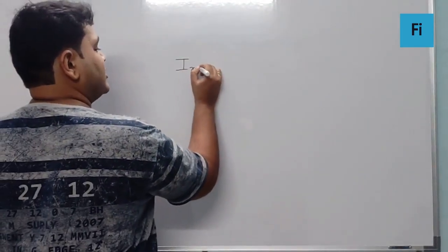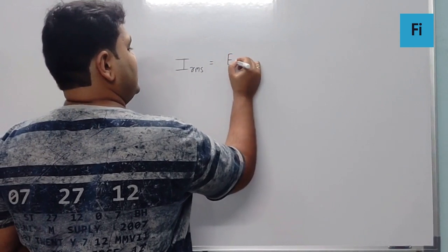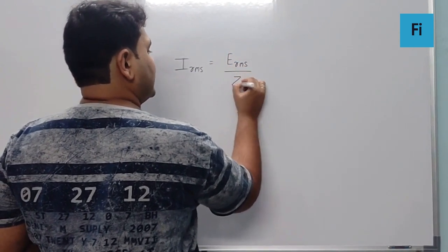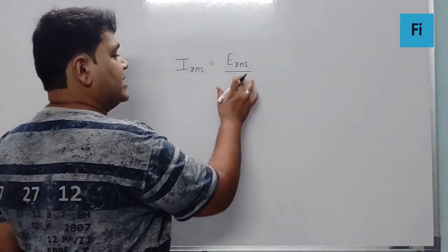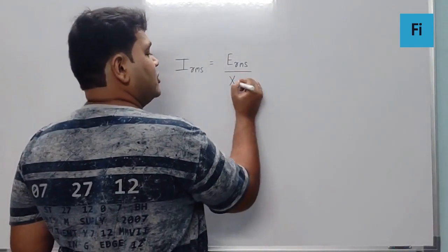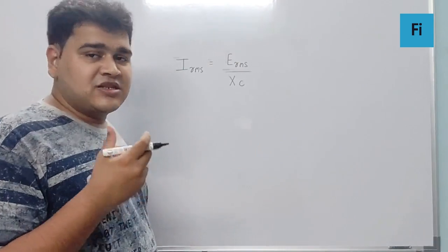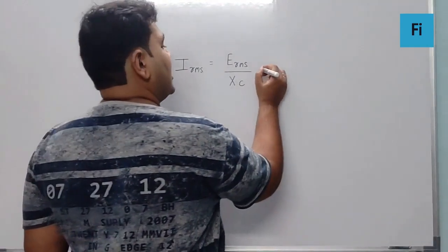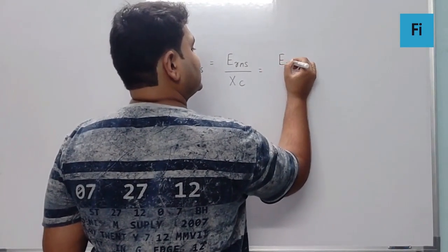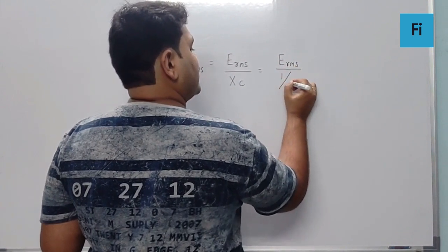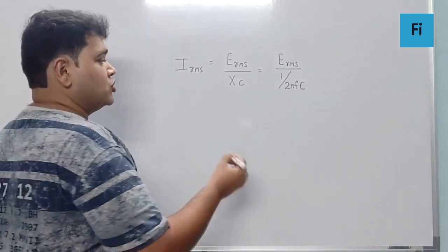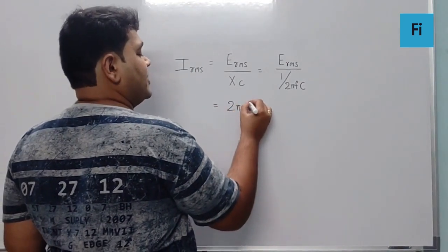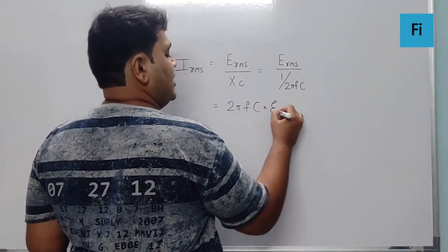Now we know IRMS is ERMS upon Z. Now since there is only capacitance over here, I can say the Z is actually equal to XC, the capacitive reactance. ERMS is as it is, XC can be written as 1 upon 2 pi FC. So eventually the value becomes 2 pi FC into ERMS.